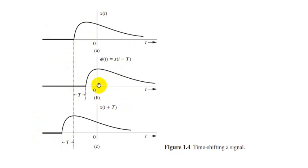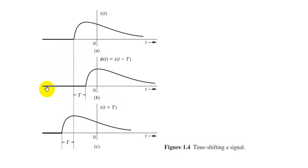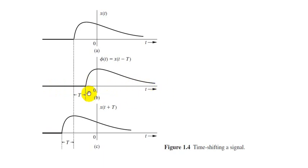We call it time shifting because every operation is happening with respect to the time axis. The x-axis represents time, and we are shifting the signal either rightwise or leftwise along this time axis. That's why we call it time shifting.